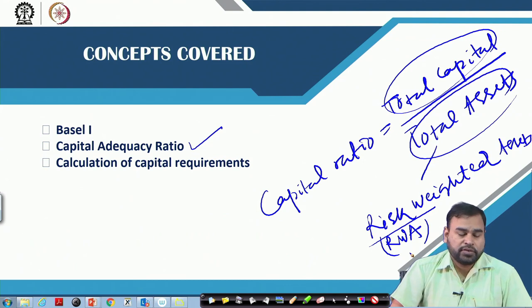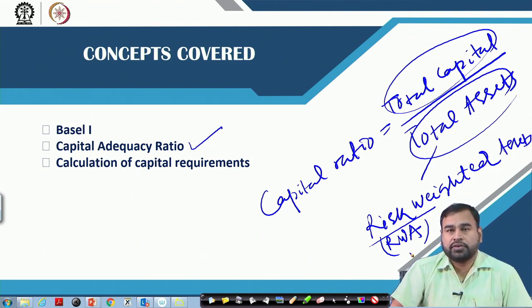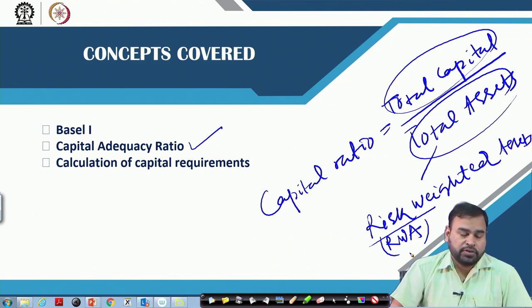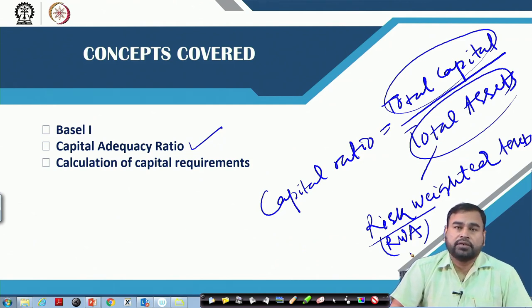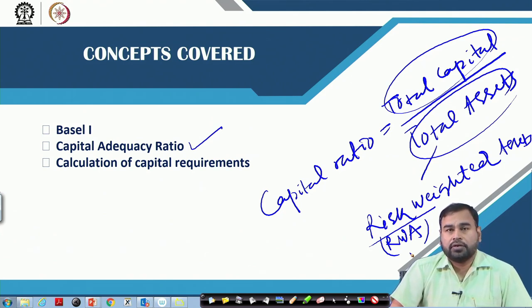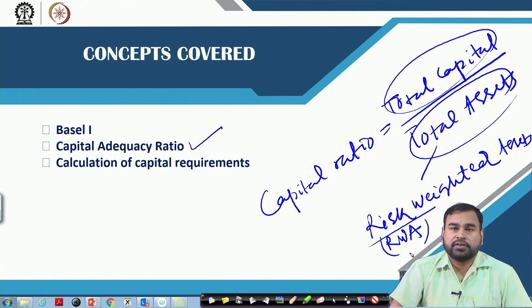We will be discussing what exactly the capital adequacy ratio is and how the calculation of capital is always made by commercial banks as per the Basel norms. We will start with Basel 1, then move towards Basel 2 and Basel 3 in subsequent sessions.